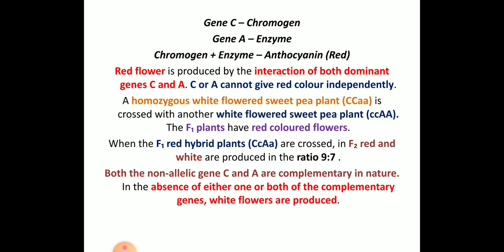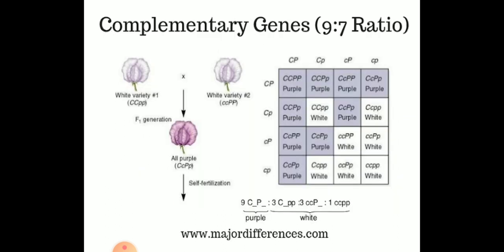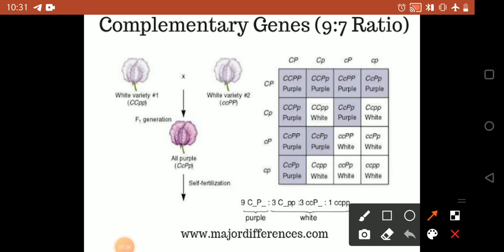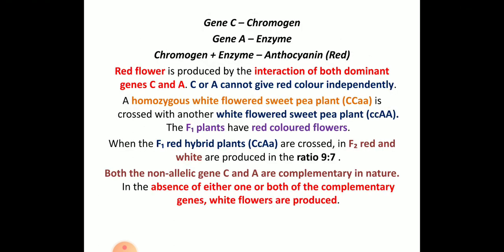The red flower is produced by the interaction of both dominant genes capital C and capital A. Capital C and capital A cannot give red color independently — both dominant notations must be present for red color formation. The homozygous white flower capital C capital C small a small a is crossed with another white flower small c small c capital A capital A. Both non-allelic genes capital C and capital A are complementary.